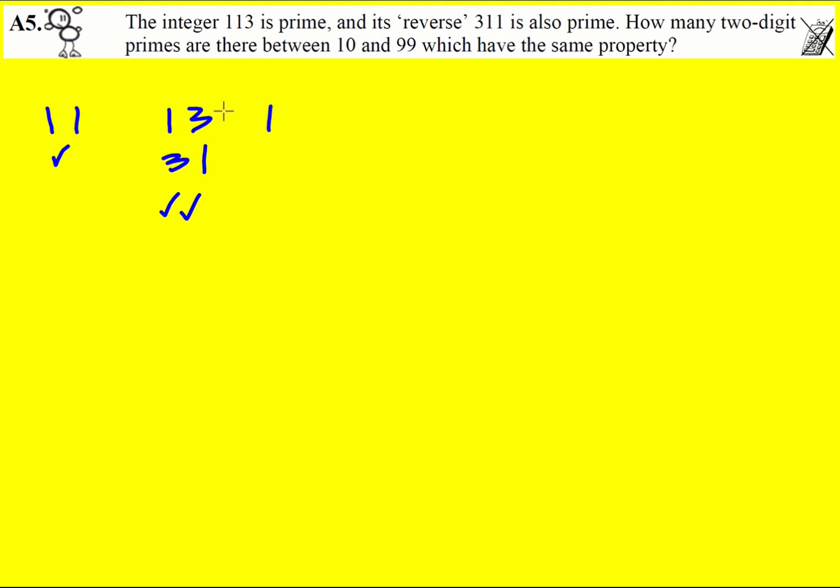Then I'm going to jump to the next two-digit prime 17 and 71 that works. 19 and 91 - sometimes people think that 91 is a prime but actually it's divisible by 7 so that doesn't work.